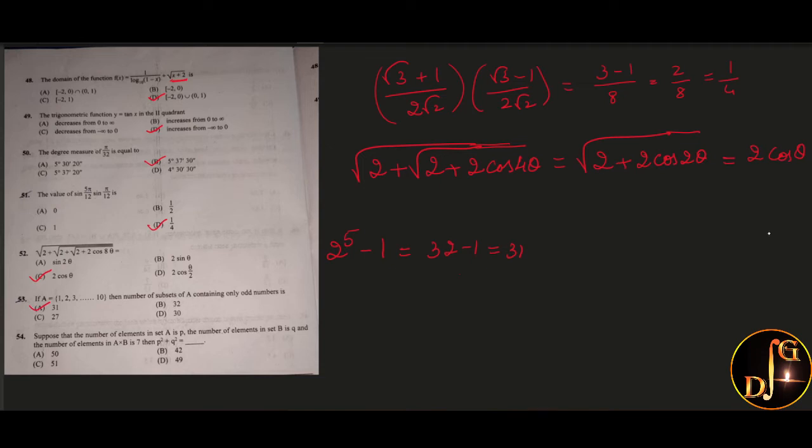Next, suppose the number of elements of A is P and number of elements in B is Q and number of elements in A cross B is 7. Then P square plus Q square is equal to. We know that number of elements in A cross B is always equal to number of elements in A times number of elements in B. This is equal to 7. Therefore, the value of P and Q are 1 and 7. Either P is 1 and Q is 7 or Q is 7 and P is 1. So P square plus Q square gives us 1 square plus 7 square, that is 50. So answer is option B.